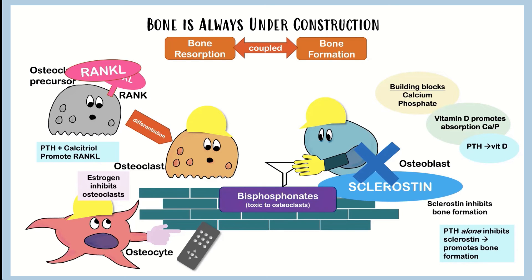First of all, bisphosphonates. These are toxic to osteoclasts. What bisphosphonates do is they go into bone, stick to the surface, and become incorporated into the bone. When the osteoclast comes along and digs up a little bit of bone, it's going to get exposed to those chemicals, and they're toxic to the osteoclast - the osteoclast dies. So bisphosphonates cause osteoclast toxicity and death.